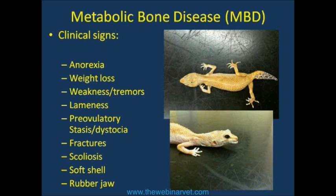Reproductive conditions can also be caused or exacerbated by metabolic bone disease. Egg binding or dystocia, and pre-ovulatory follicular stasis, can often result from low calcium. Reproductive females have a very high calcium demand — many reptile species either give birth to live young requiring skeletal development, or lay large clutches of calcified shelled eggs. If diet or lighting isn't correct as the animal approaches breeding season, it can send the animal into metabolic bone disease very quickly in the later stages of gestation.